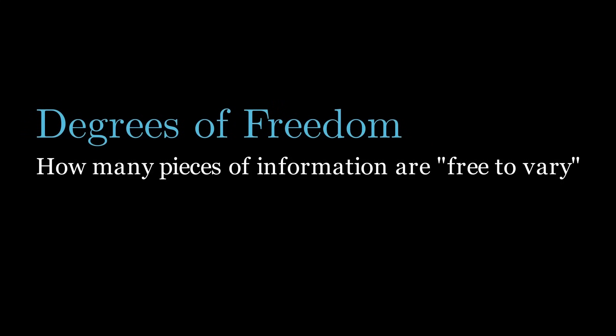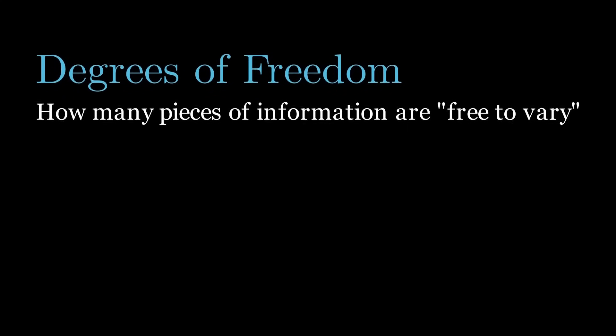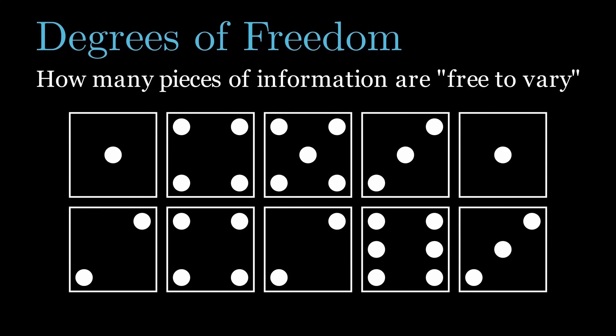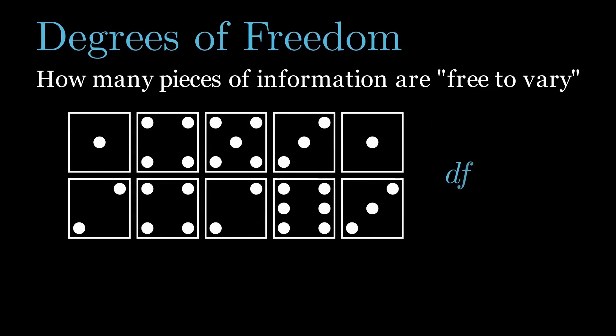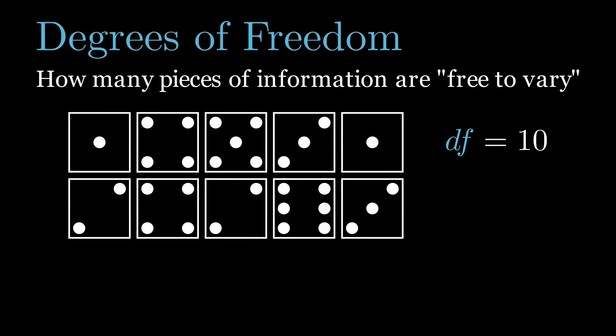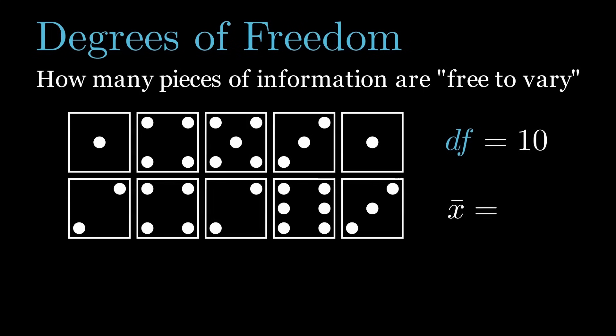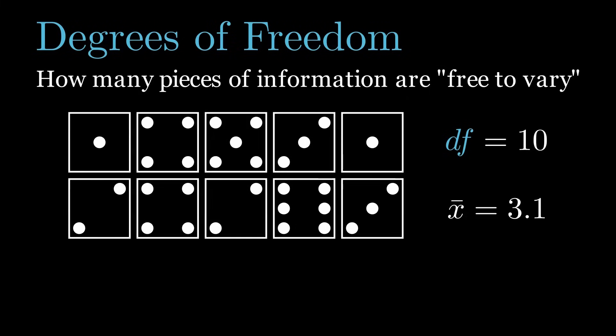Now, the way it's typically covered goes something like this. Degrees of freedom captures the amount of information that is free to vary in some calculation. For example, if you collect 10 data points, that's 10 numbers that could all be different numbers, so we have 10 degrees of freedom. If you then use these data to calculate some statistic like the mean, then you'll have used up a piece of information, and so have one fewer degree of freedom.